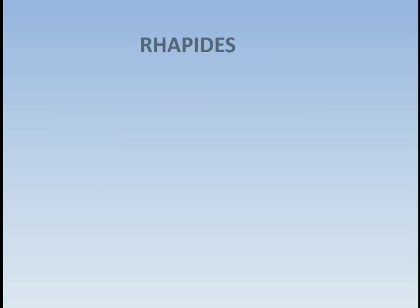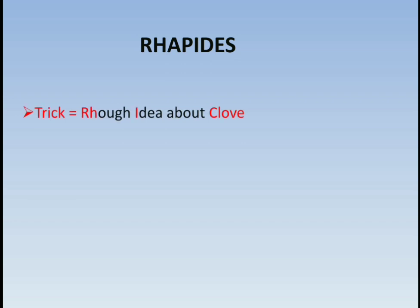Next is raphides. The trick is 'rough idea about clove.' Rough resembles raphides, and the drugs are clove — I denotes Indian and European squill.